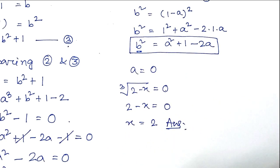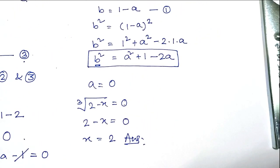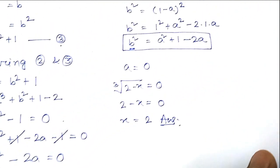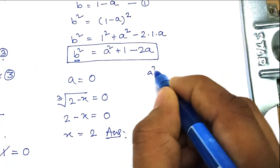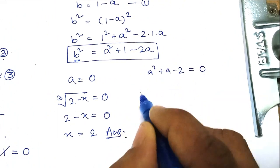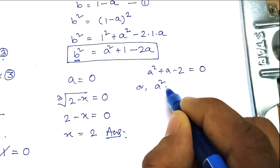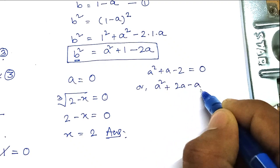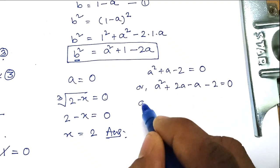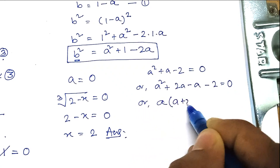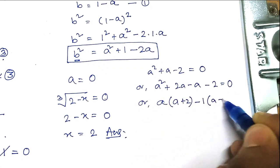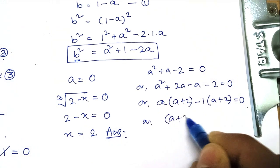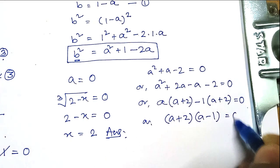For the second expression, a squared plus a minus 2 equals 0. We factor this as a squared plus 2a minus a minus 2 equals 0, giving a(a plus 2) minus 1(a plus 2) equals 0, which factors to (a plus 2)(a minus 1) equals 0.